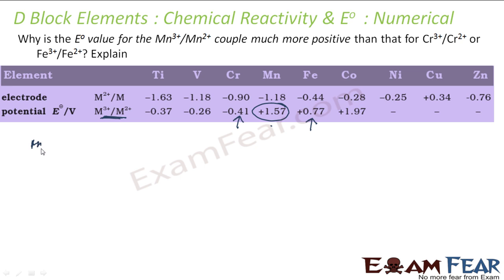Mn³⁺ to Mn²⁺, the value is 1.57 volt. For chromium 3 plus to chromium 2 plus, the value is minus 0.41, meaning the reaction is not feasible or favorable. For iron, Fe³⁺ to Fe²⁺ is favorable at 0.77 volt.